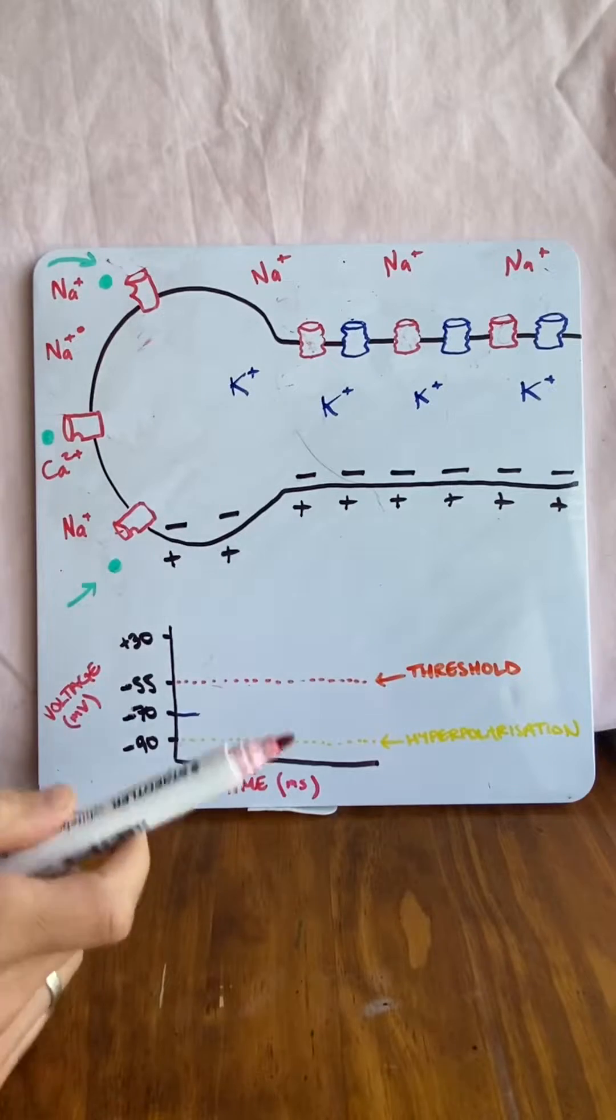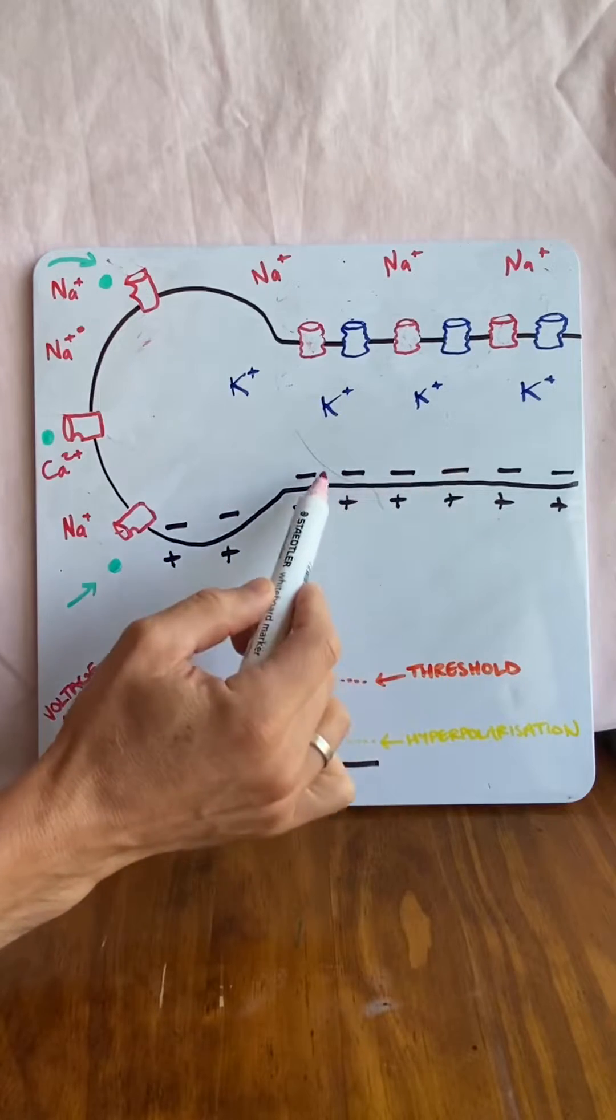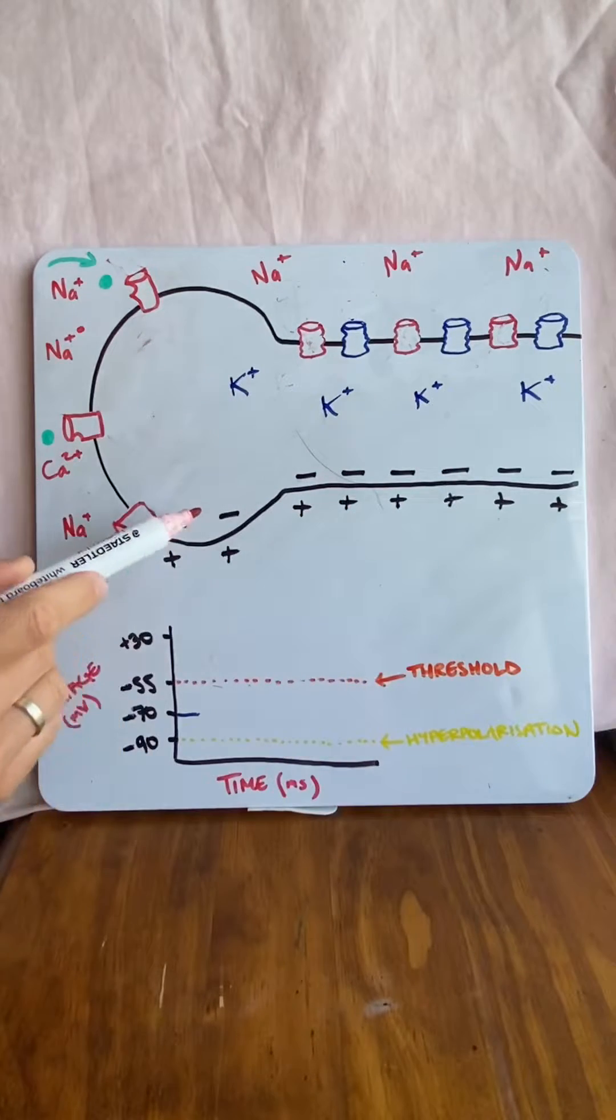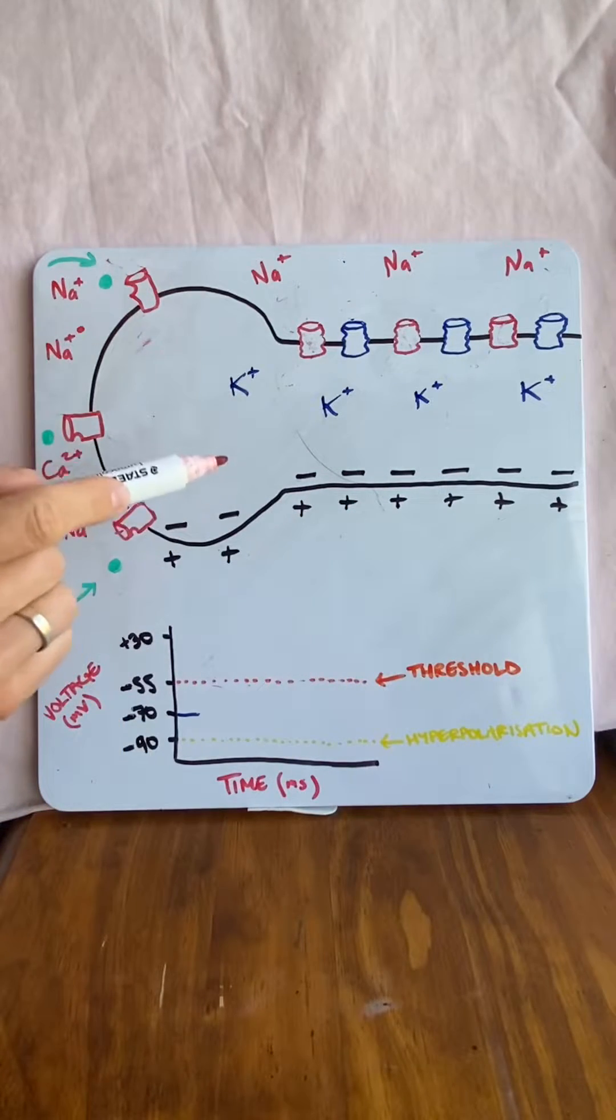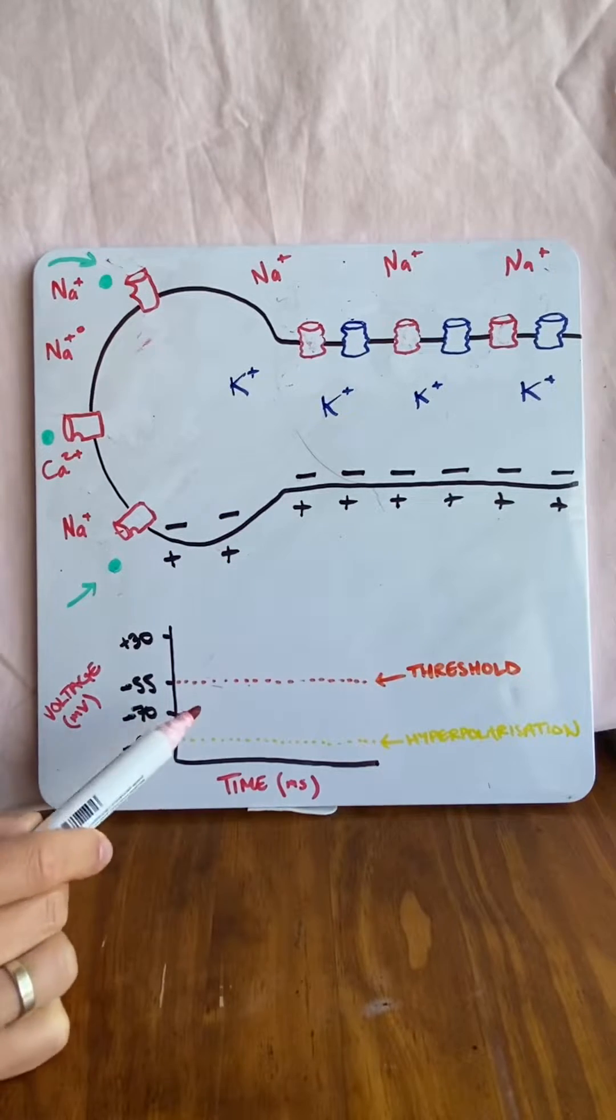And it can do it because it has a resting membrane potential. That's a charge difference from the inside of the membrane compared to the outside. And the charge difference is actually negative 70 millivolts inside compared to the outside. And I've drawn that up right here.